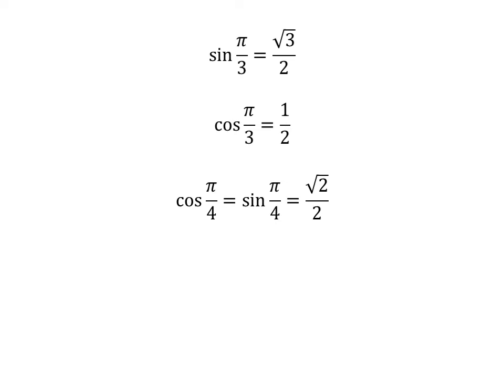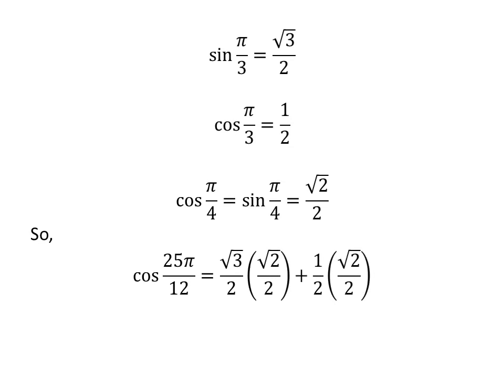So, we plug in these values in the above equation. We get cosine of 25 times pi upon 12 is equal to square root of 3 upon 2 times square root of 2 upon 2 plus one half times square root of 2 upon 2.